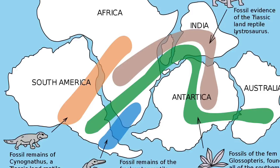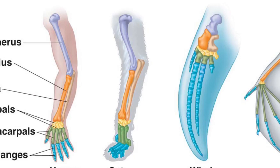Biogeography is the study of past and present distribution of organisms. What does Darwin's mechanism for evolution suggest about living and extinct species? According to the principle of common descent, all species — living and extinct — are descended from ancient common ancestors. Homologous structures are structures that are similar in different species due to common ancestry.